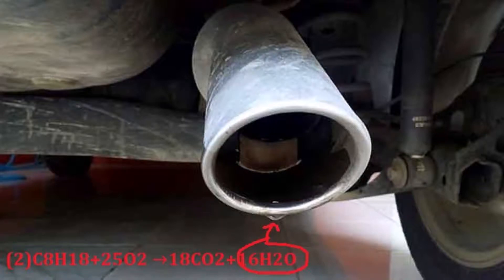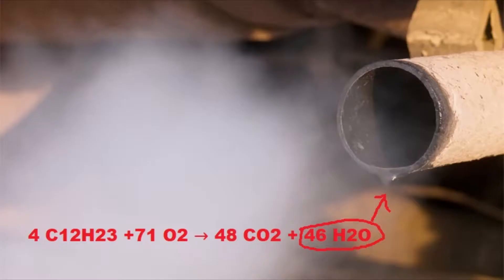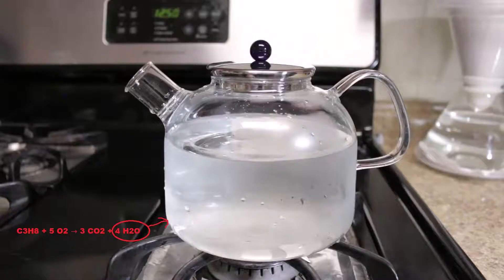We've all likely seen water dripping from tailpipes during cold weather conditions and the accumulation of water on kettle surfaces. Have you ever asked why this happens? Is it a malfunction? Here is the answer.